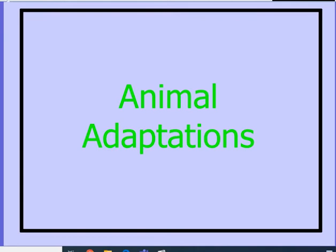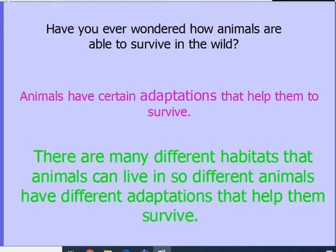Now we're ready to talk about animal adaptations. Let's figure out what an animal adaptation is. Have you ever wondered how animals are able to survive in the wild? That's where an animal lives — it's called their habitat. They have adaptations that help them survive. An adaptation is a part of their body, or something that's changed on their body, that helps them survive. There are many different habitats, so different animals have different adaptations.